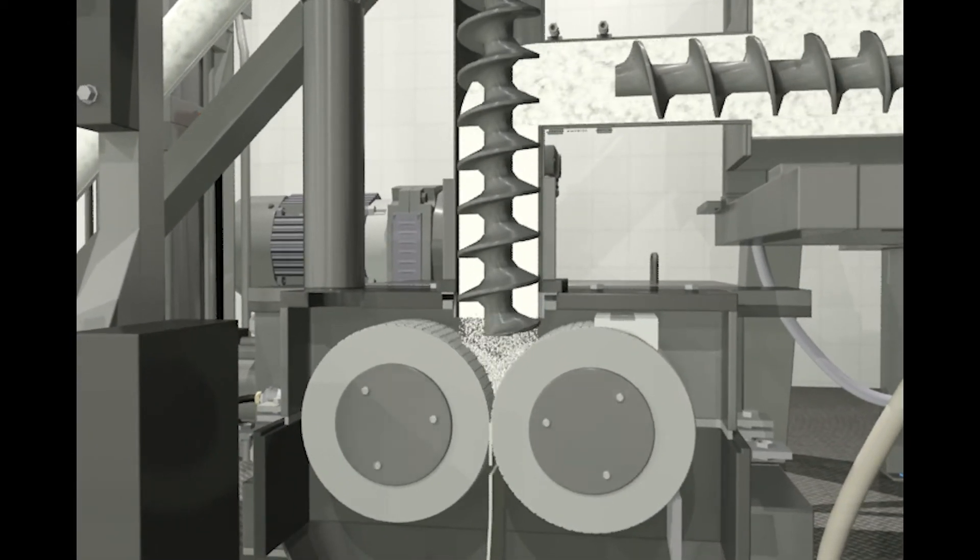The twin screw feed arrangement allows for efficient compaction of both low bulk density and high bulk density powders.